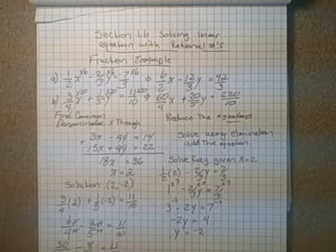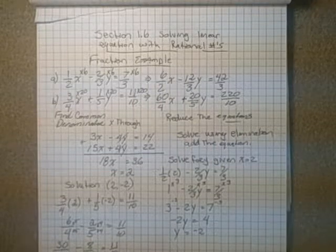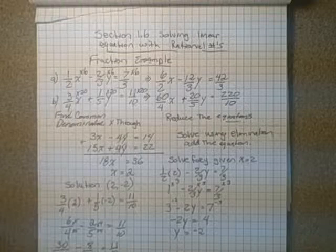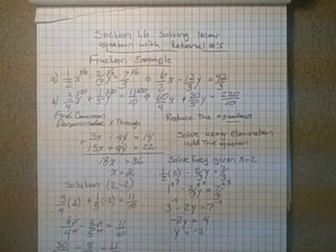And if we work that out, 22 over 20 is equal to 11 over 10, which is true. Because if we reduce this down, we'll get 11 over 10 as well. So we know that we are correct there.